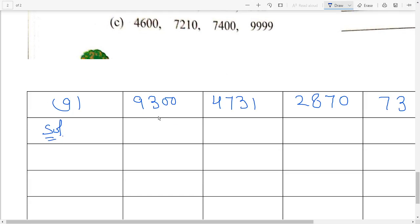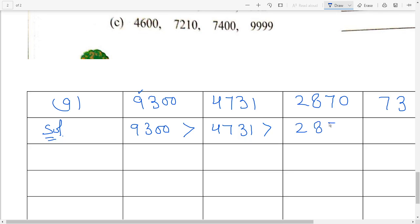Solutions. First of all, find the greatest number — 9000, 4000, 2000, and 73. Which one is greatest? 9000 — so write 9300 right here, put the sign. Rest of three numbers: which one is greater? 4000 — write 4731, put the sign. Now 2870 — put the sign, and write the smallest number: 73.